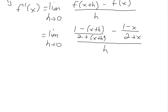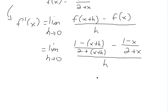Now we have to simplify this so we can plug in h equals 0. We can't just plug in 0 right now because we'd be dividing by 0, which is undefined. So we have to rearrange this by multiplying the top and bottom by a common denominator.